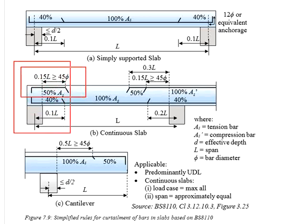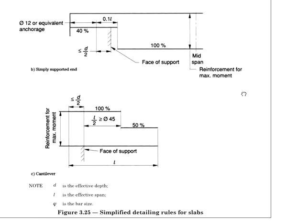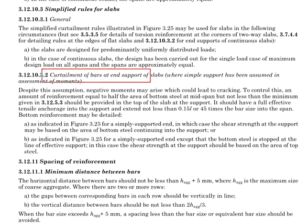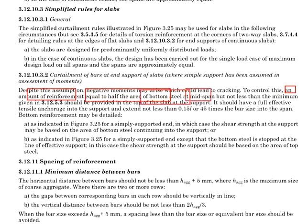Next, we look at the top reinforcement at the end support of the continuous slab. Although the curtailments and the amount of reinforcement bar are not indicated in Figure 3.25 of British Standard, it is stated in Clause 3.12.10 that the curtailments of the bar at the end support of the slab are defined. Although normally we assume the end support is simply supported during the assessment of the moment, negative moment may arise, which could lead to cracking as a result of the redistribution of stress along the continuous slab. To control this, an amount of reinforcement equal to half of the area of the bottom steel at the mid-span should be provided at the top of the slab at the support.